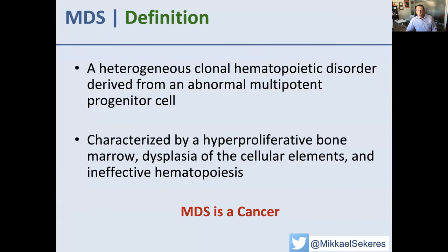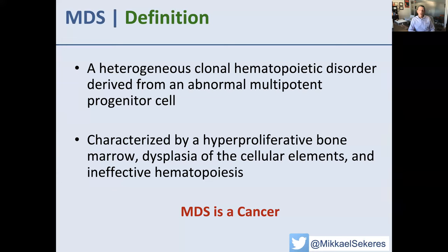Let's start with a brief definition. What are myelodysplastic syndromes? They're defined as a heterogeneous collection of clonal hematopoietic disorders derived from an abnormal multipotent progenitor cell, characterized by a hyperproliferative bone marrow, dysplasia of the cellular elements, and ineffective hematopoiesis. My dad, who was a journalist, would have taken me out to the woodshed for giving a definition that convoluted. That's really why a lot of patients — and even doctors — don't understand myelodysplastic syndromes. So let me put it in really simple terms.